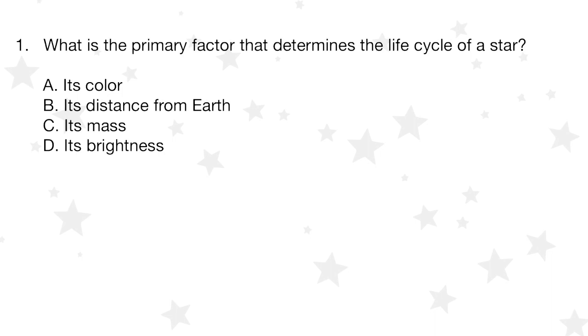Question 1. What is the primary factor that determines the life cycle of a star? A its color, B its distance from the earth, C its mass, or D its brightness?